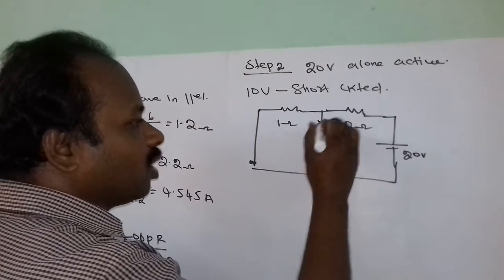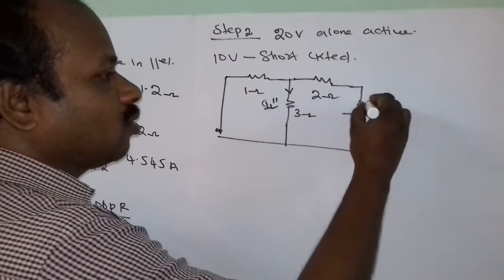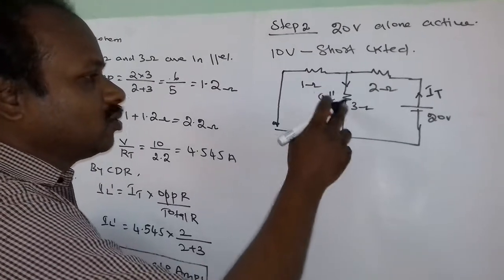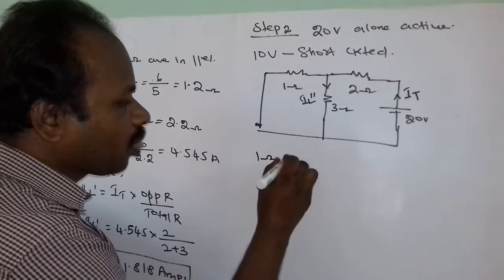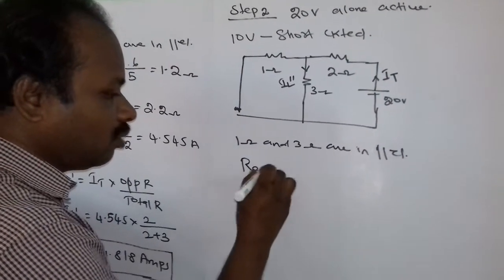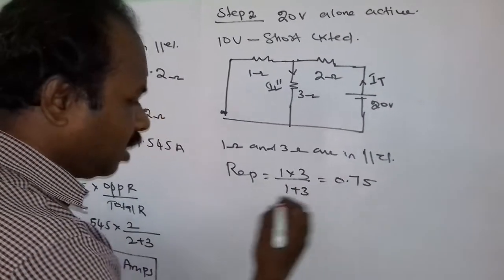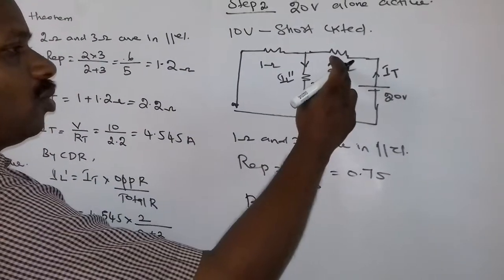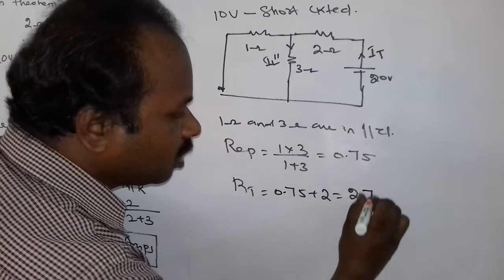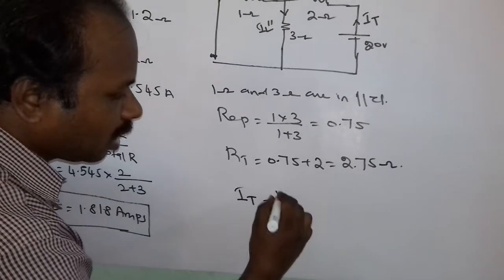We mark the load current as IL double dash and the current from the source as IT. Here, the 3 ohm resistor and 1 ohm resistor are connected in parallel. R equivalent parallel equals 1 × 3 divided by 1 + 3, equal to 0.75 ohm. The total resistance is 2 plus R equivalent parallel, so 0.75 + 2 equals 2.75 ohm. We calculate the total current as V divided by RT.